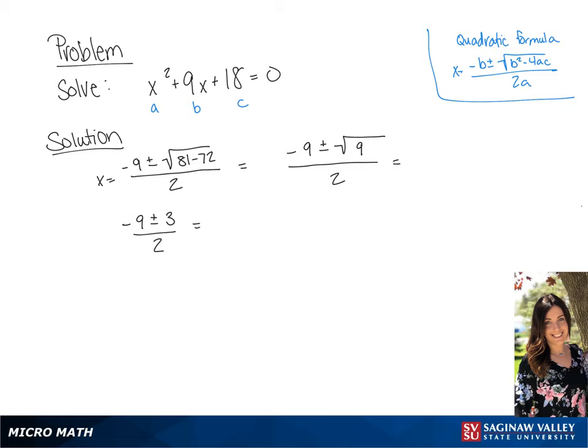So we are going to find that we have two answers. We have negative 9 plus 3 over 2, which is going to be negative 3, or negative 9 minus 3 over 2, which is going to be negative 6.